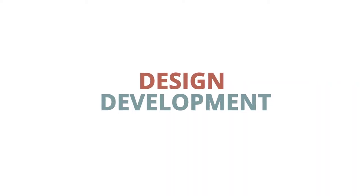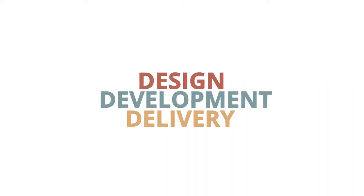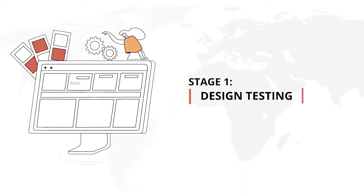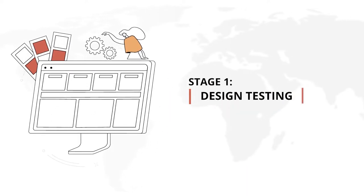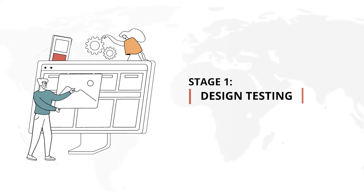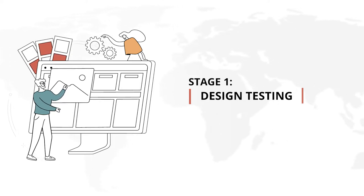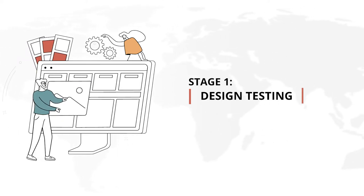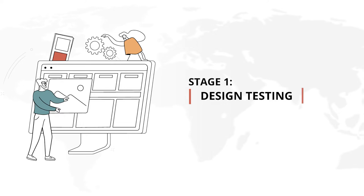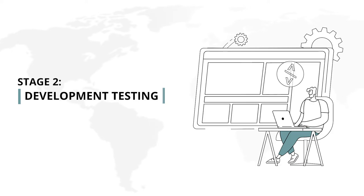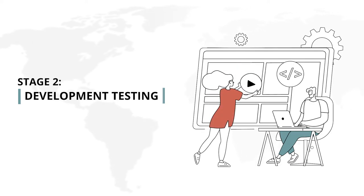Let's get started with design testing. At this stage, localizers look at alignment — does any dynamic content such as menus, pop-ups, and text boxes fit in nicely? Let's proceed to the next stage.